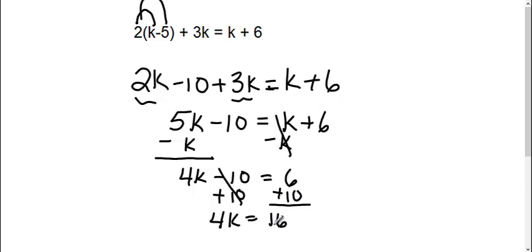And lastly, I still need to get this k by itself, so I need to get rid of that 4. It's 4 times k, so the opposite of multiplication is division. We're going to divide both sides by 4.